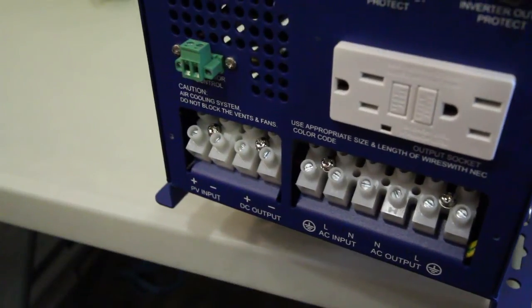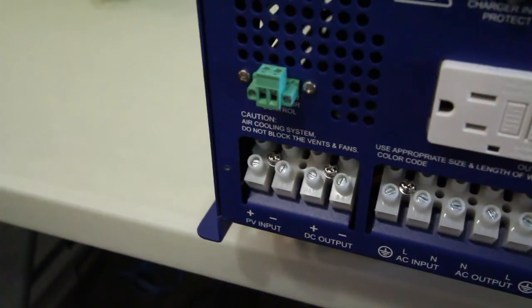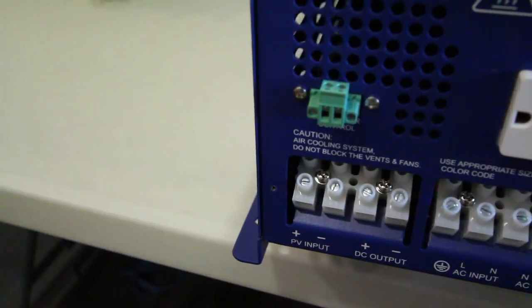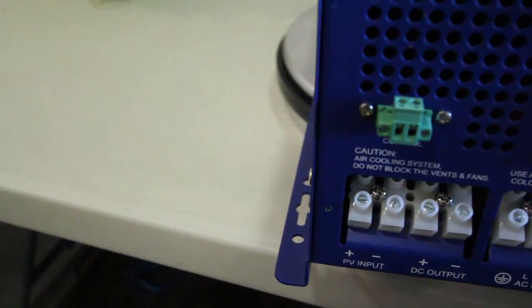The direct connect terminal block on this unit also allows for what's called an uninterrupted power supply, which in the event of a power outage will allow you to keep all your appliances running without any interruption.